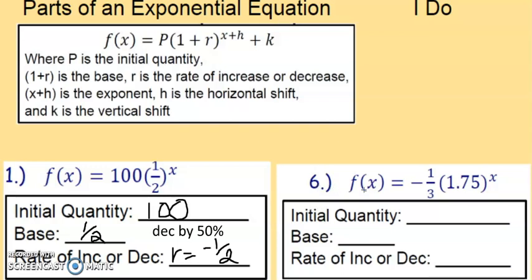Let's look at the next one. f(x) = -1/3(1.75)^x. The initial quantity is what's in front of the parenthesis. That's negative 1/3. The base is 1.75.